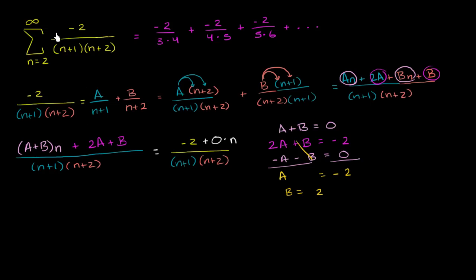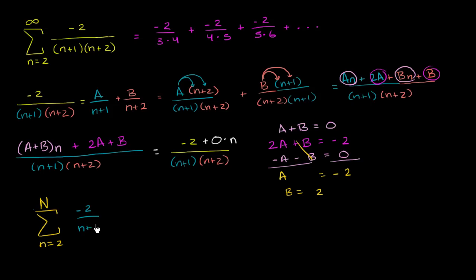Now we can rewrite this. Let me write it as a finite sum rather than an infinite sum, and then take the limit as we go to infinity. So this is the sum from n equals 2 to capital N of: negative 2 over (n+1), plus 2 over (n+2). Later we can take the limit as capital N approaches infinity to figure out the full sum.